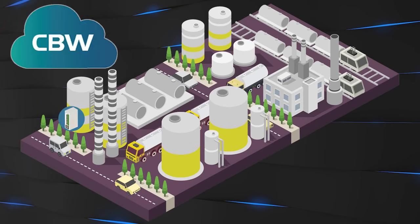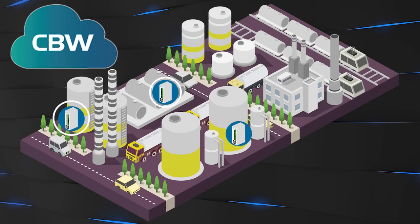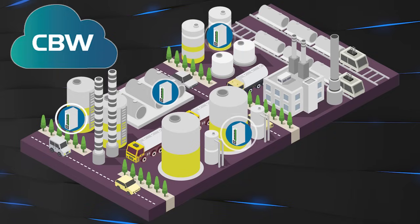The Control by Web cloud allows for all cell devices to communicate via a peer-to-peer connection, creating a monitoring and control network that coordinates I/O from anywhere.